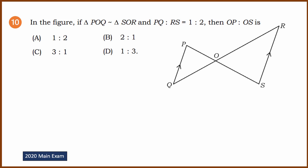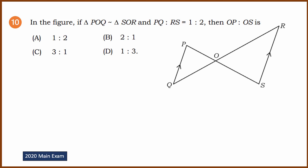Last question: Triangle POQ is similar to triangle SOR. The ratio PQ to RS is 1 to 2. We need to find the ratio OP to OS. Since the triangles are similar, all corresponding side ratios are equal. PQ is a side of triangle POQ and RS is the corresponding side of triangle SOR, and OP and OS are also corresponding sides of the same two triangles. So the ratio OP to OS is also 1 to 2.